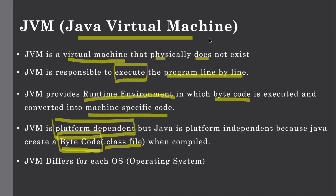The main reason why JVM is platform dependent is because each OS has a different JVM. For Mac we have a different JVM, for Windows we have a different JVM, and for Linux we have a different JVM. So JVM is platform dependent, while Java is platform independent.